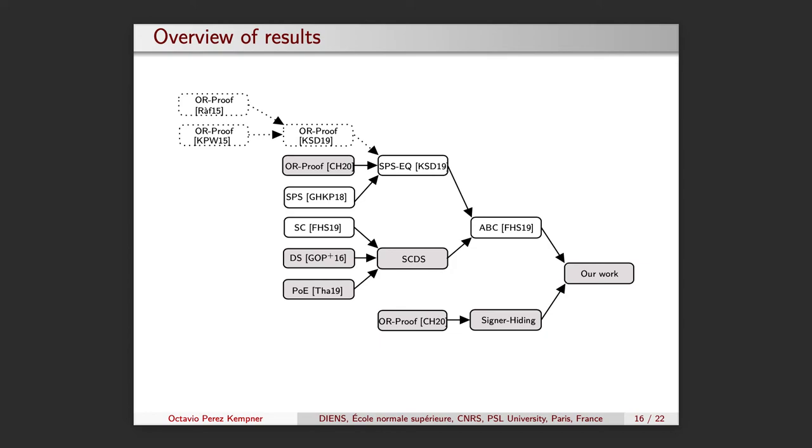Now that we went through the main building blocks, it's time to discuss more in detail our approach to achieve the signer-hiding property. How can we use the fact that signatures can be updated to verify under a different but equivalent public key? Well, the main idea goes as follows.